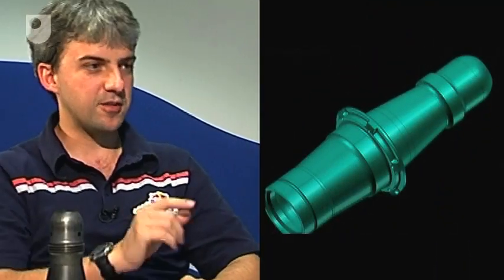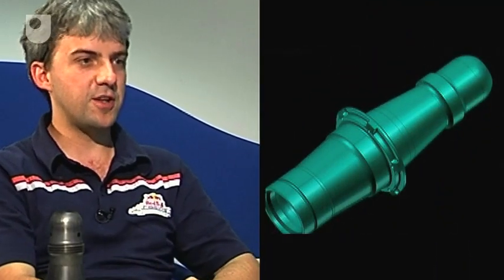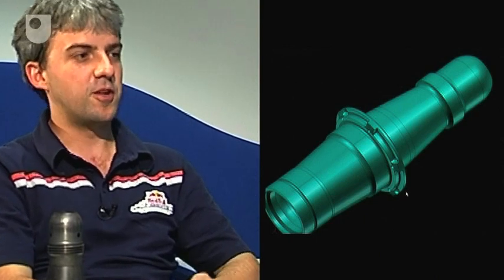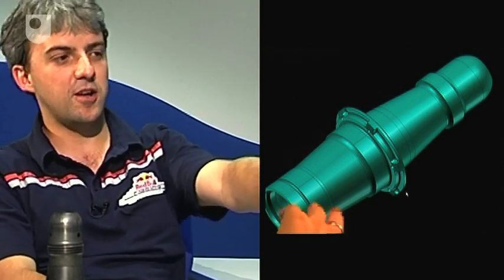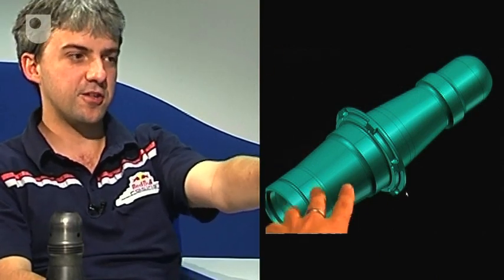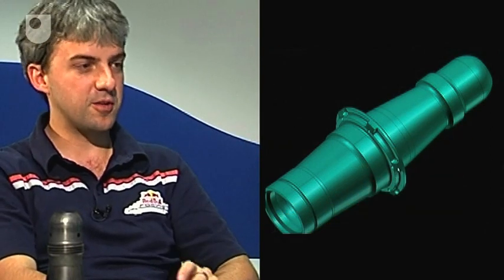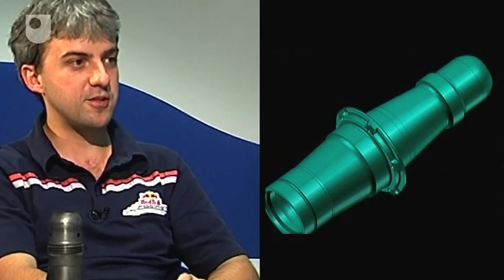The loads and restraints on this model are effectively split into two parts. One is on the bearing side of the axle — the left-hand side on the screen — and the other is the right. And in between those two is the flange.